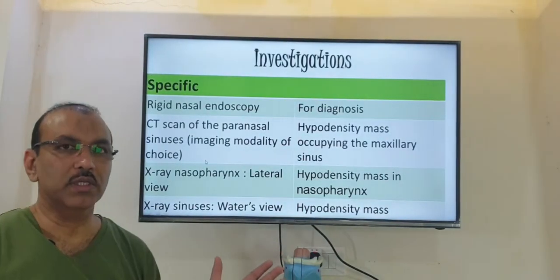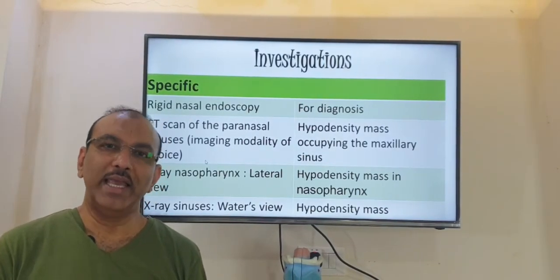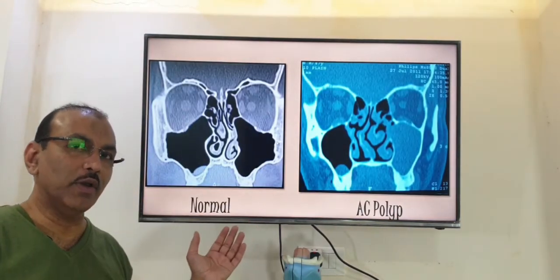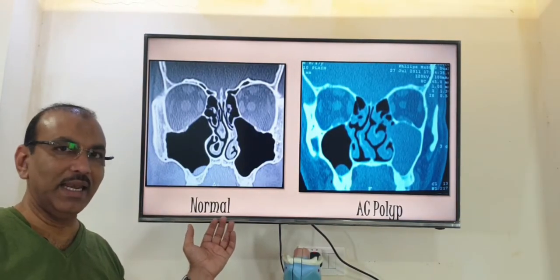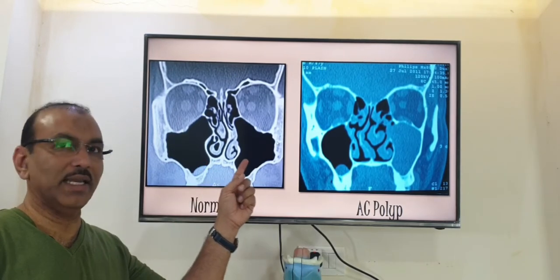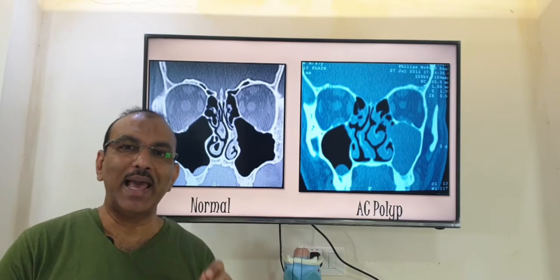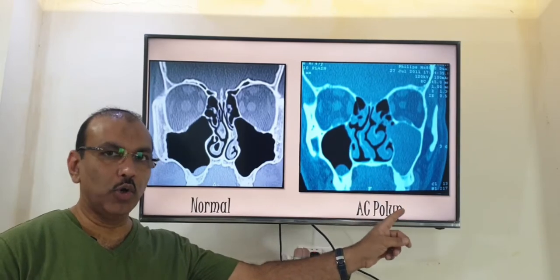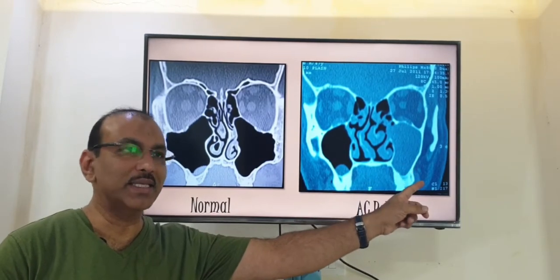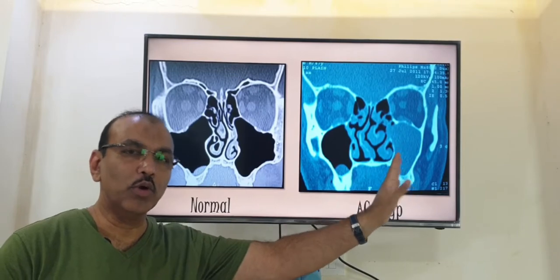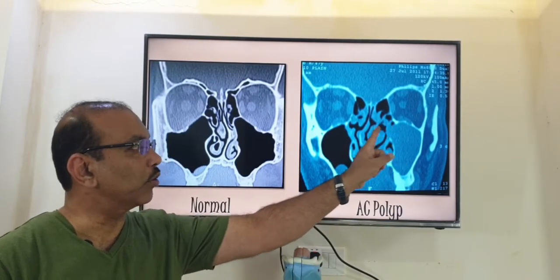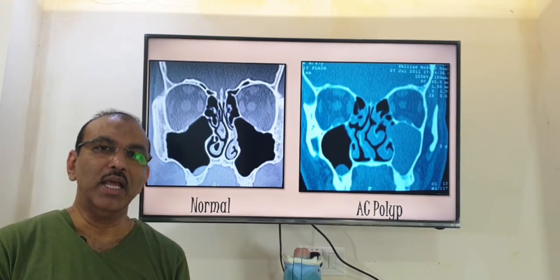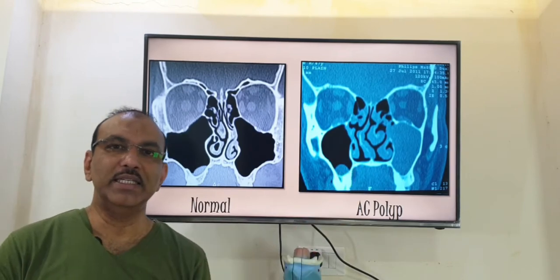Coming to diagnosis — diagnosis is mainly by CT scan. With X-ray we can also do it in two or three different views, but CT scan is preferred. In a normal CT scan, both the maxillary sinuses appear black inside, meaning air is inside — that is normal. In case of an antrochoanal polyp, that particular side appears hypodense, meaning somewhat white in color, and you can see the polyp coming out through the sinus. By clinical examination and reconfirmation by CT scan, we come to a diagnosis.